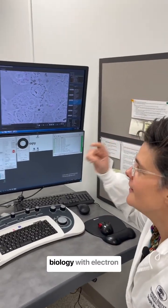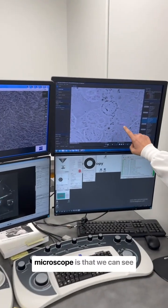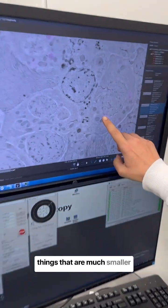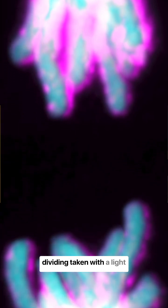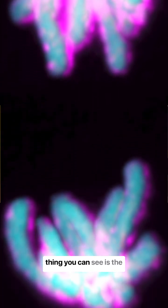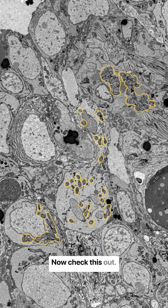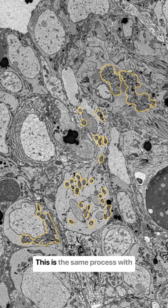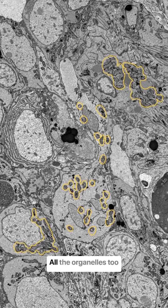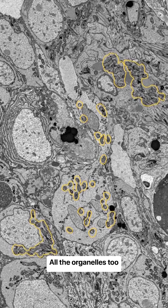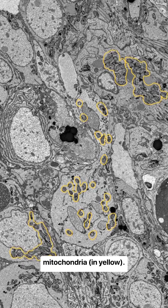The benefit of looking at biology with an electron microscope is that we can see things that are much smaller than we can see with light microscopy. For example, this is a stem cell from a flatworm that's dividing, taken with a light microscope, where the only thing you can see is the genetic material dividing. Now check this out — this is the same process with an electron microscope, and you can see so much more detail. All the organelles too, including everyone's favorite: mitochondria.